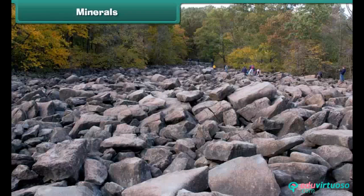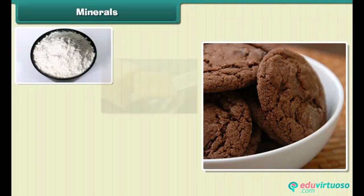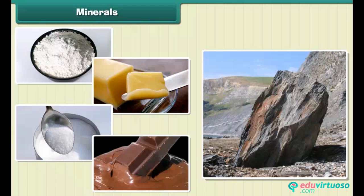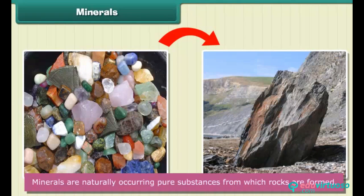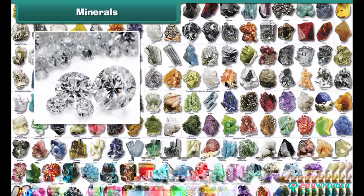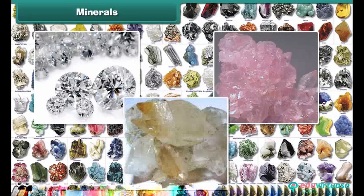Minerals: We have learnt about rocks. All rocks are made of minerals. Think of a chocolate cookie as a rock — the cookie is made of flour, butter, sugar, and chocolate. The cookie is like a rock, and the flour, butter, sugar, and chocolate are like minerals. Thus, minerals are naturally occurring pure substances from which rocks are formed. There are about 3,000 different minerals in the world, among which diamond is the hardest mineral. Quartz and calcite are two common examples of minerals.